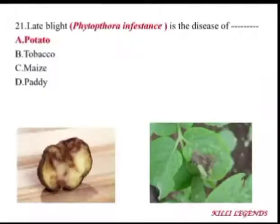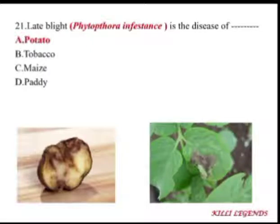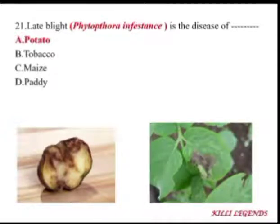Late blight of potato was prominent in the 18th century and caused large devastation in Ireland. Late blight of potato is caused by a pathogen that causes significant damage to the potato crop.